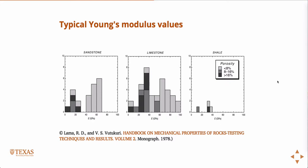For steels — anybody know what the Young's modulus of steel is? In PSI? I usually think about 200 GPa. 200 GPa is a good value. For a different variety of steels, that doesn't change a lot — it's roughly 200 GPa. But for rocks, it can vary quite widely.